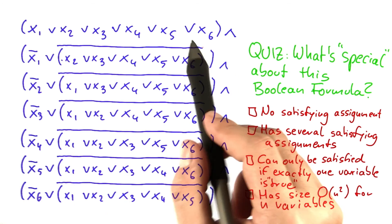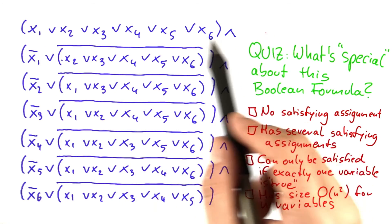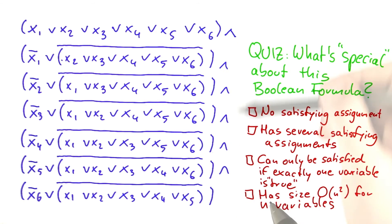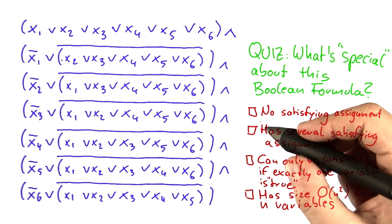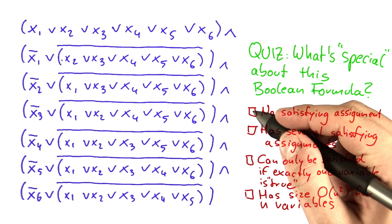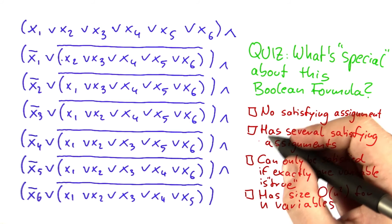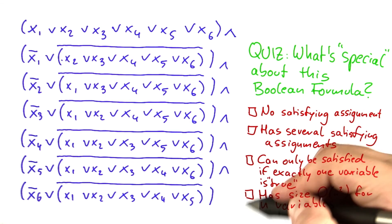And finally, if you generalize this, so not six variables, but any number N of variables, and then you do the same structure as you do here, does the whole resulting formula have size O of N squared for N variables? So as I think by now you're used to, more than one of these answers here can be true. So please check all of these that are correct.